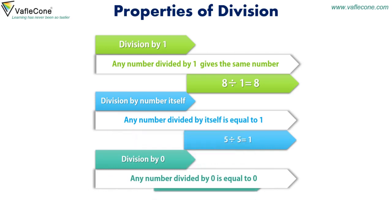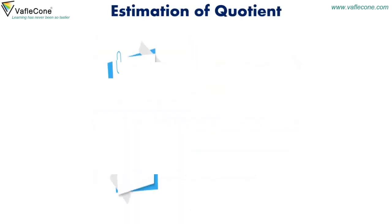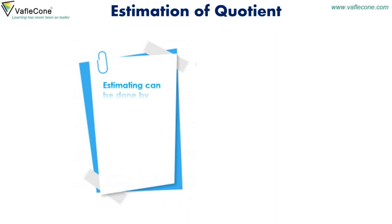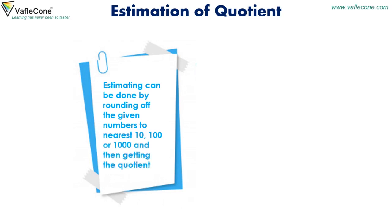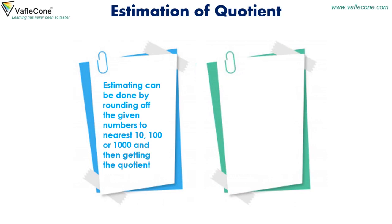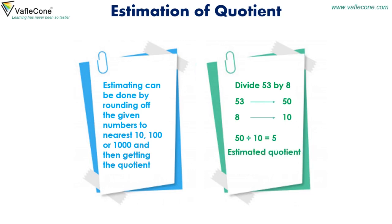For example, 8 divided by 0 is equal to 0. Estimation of quotient: estimating can be done by rounding off the given numbers to the nearest 10, 100, or 1000 and then getting the quotient. For example, divide 53 by 8 — we round off 53 to 50 and 8 to 10; now 50 divided by 10 is equal to 5, which is the estimated quotient. Thank you.